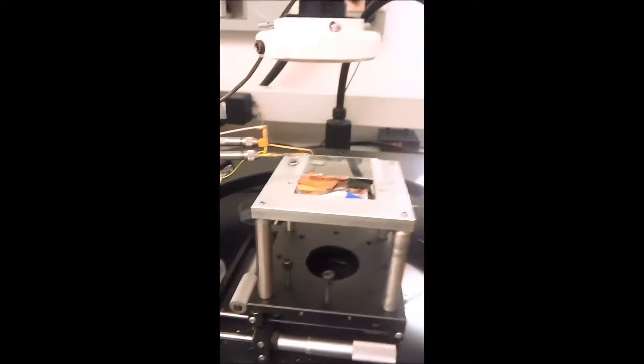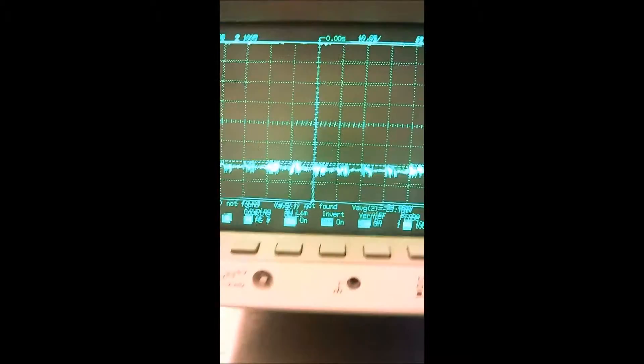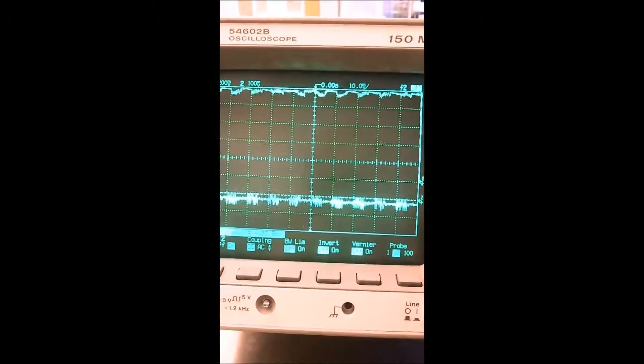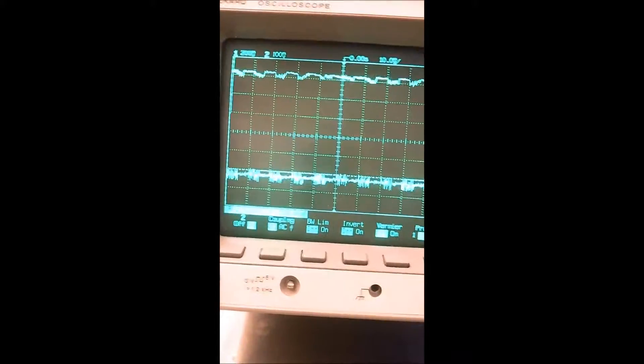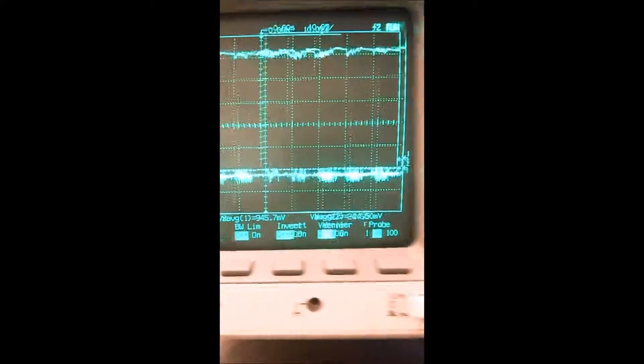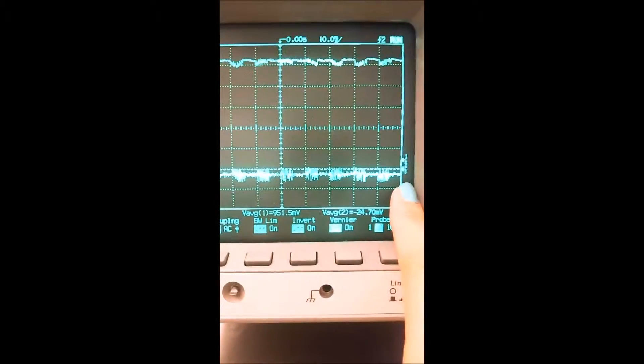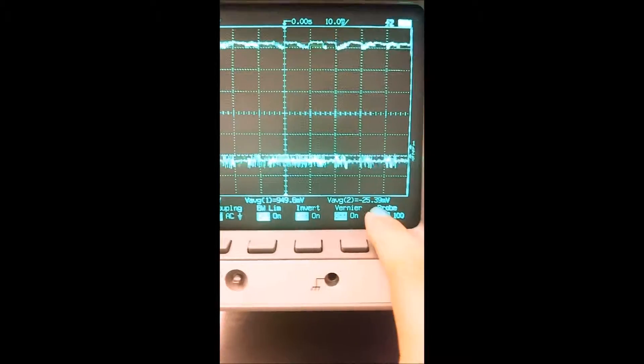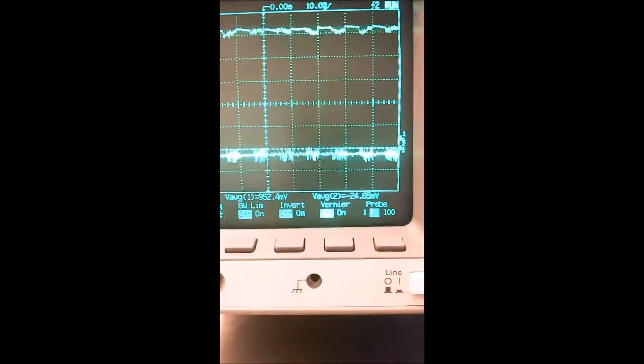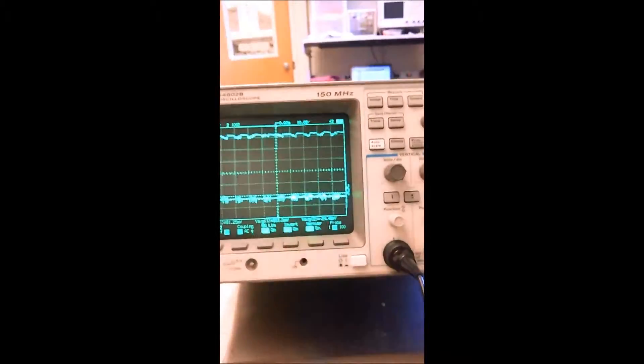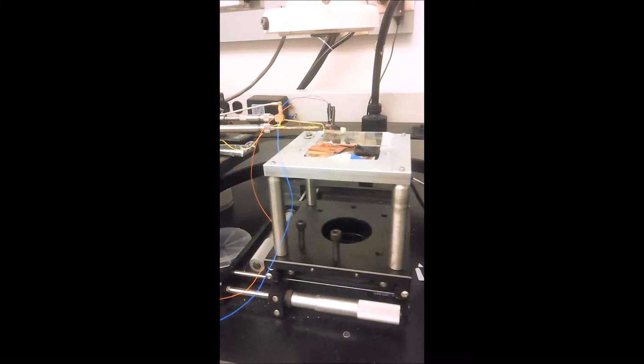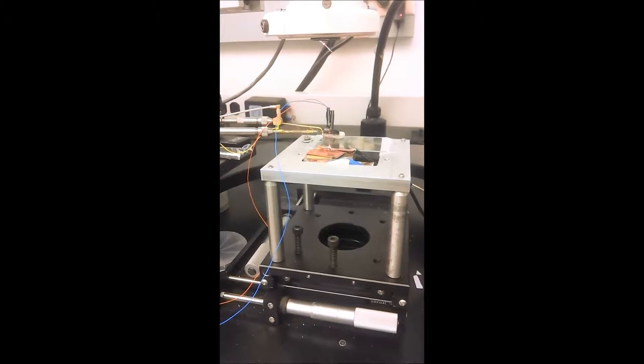So now I'm going to shine a lamp light onto the chip right now, and you can see the TIA signal is offset at a higher level. But the channel 2, which is the demodulated signal after the low-pass filter, has not changed at all. So good.